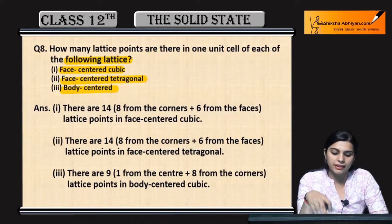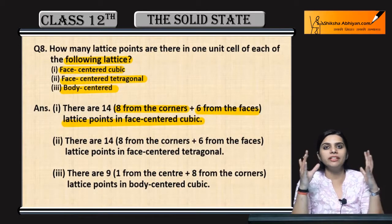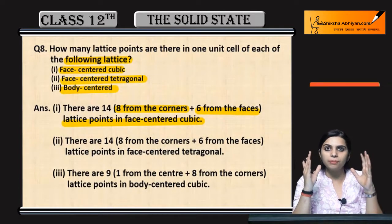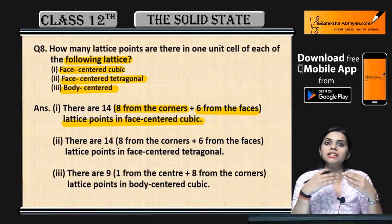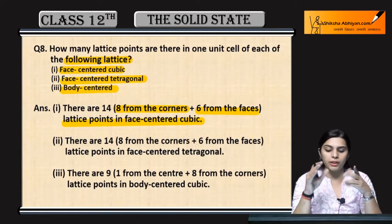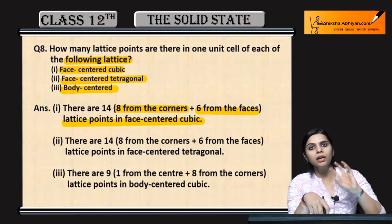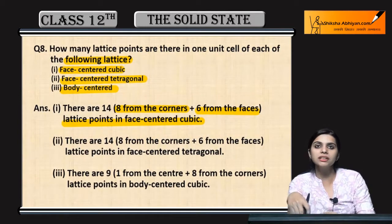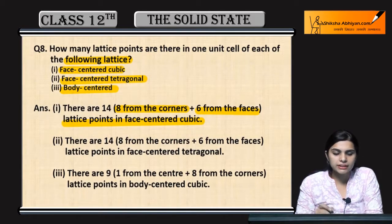In face centered cubic, there are 14 lattice points — that is 8 from corners and 6 from faces. This is your face centered cubic unit cell. Whenever you study a unit cell, some of the constituent atoms are in the corners and others are on the faces. How many corners are in the unit cell? 8 corners. And how many faces? 6. So every face has one, giving us 8 plus 6, which equals 14.